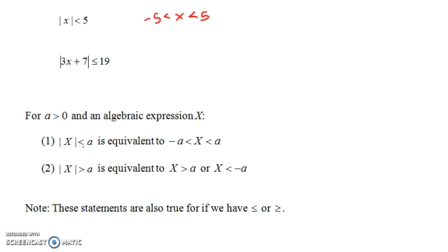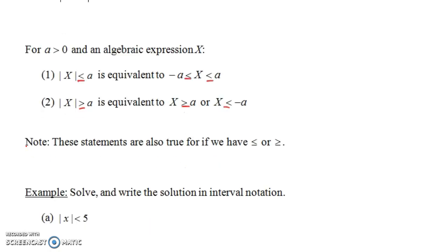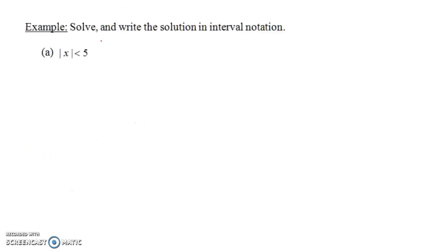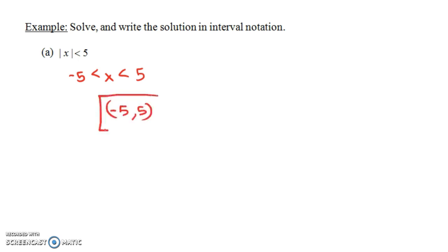For example, in part A, if I put a less than or equal to here, these would become less than or equal to's here. Same thing with the greater than or equal to. So let's do a couple of examples — solve and write the solution in interval notation. For the absolute value of x less than 5, the expression without the absolute value is between minus 5 and 5. On a number line, that's all numbers between minus 5 and 5, so in interval notation it's the open interval from minus 5 to 5.